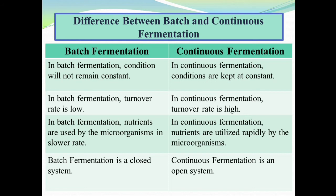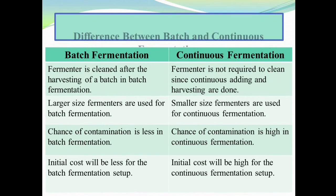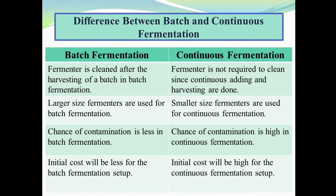Batch fermentation is a closed system while continuous fermentation is an open system. The fermenter will be cleaned after the harvesting of a batch in batch fermentation, but cleaning is not required in continuous fermentation. Large size fermenters will be used in batch fermentation while smaller size fermenters will be used for continuous fermentation. Chances of contamination are less in batch fermentation because it is a closed system, and contamination risk is very high in continuous fermentation because it is an open system. Initial cost will be less for batch fermentation setup while the initial cost will be high for continuous fermentation setup.